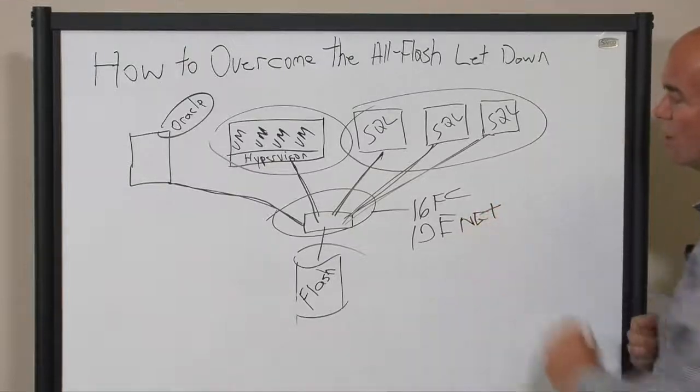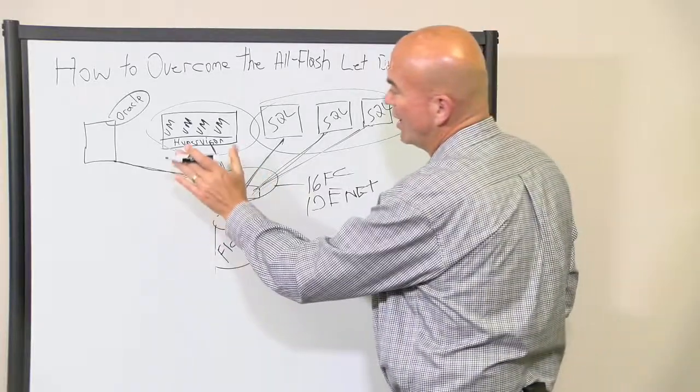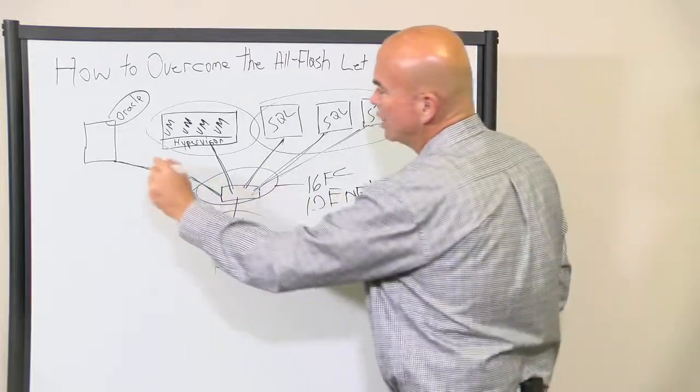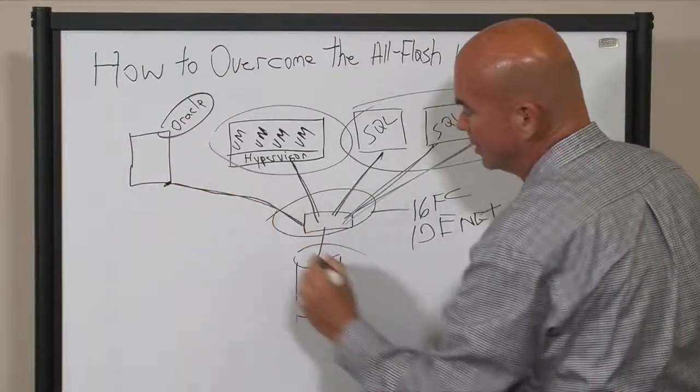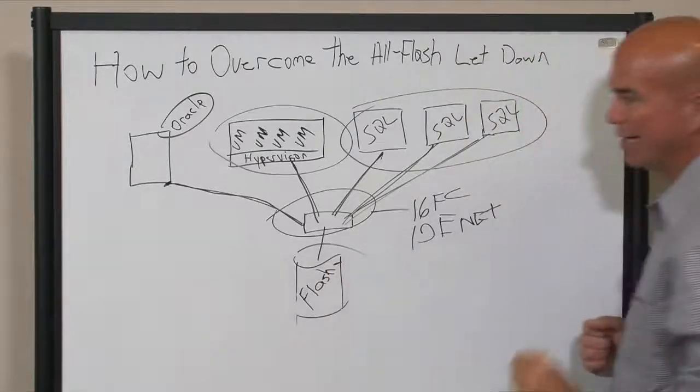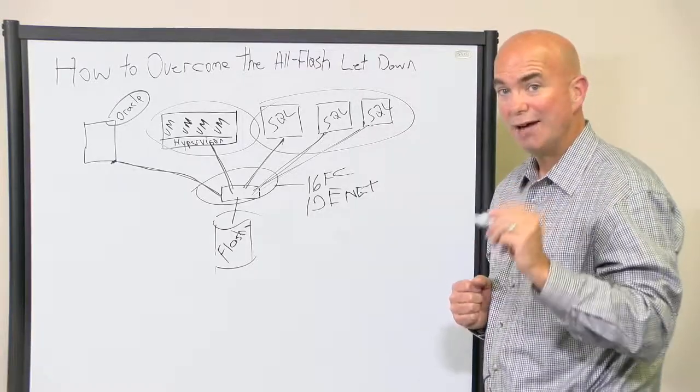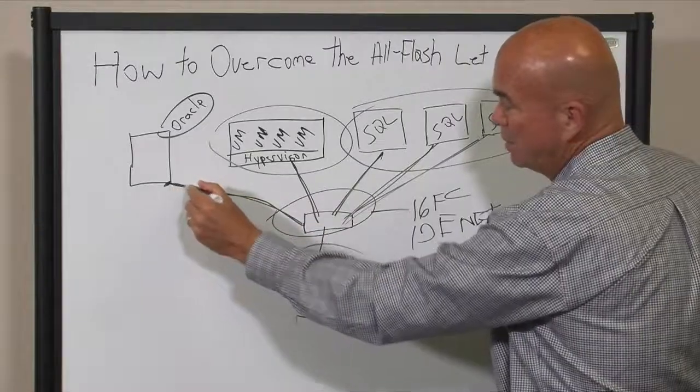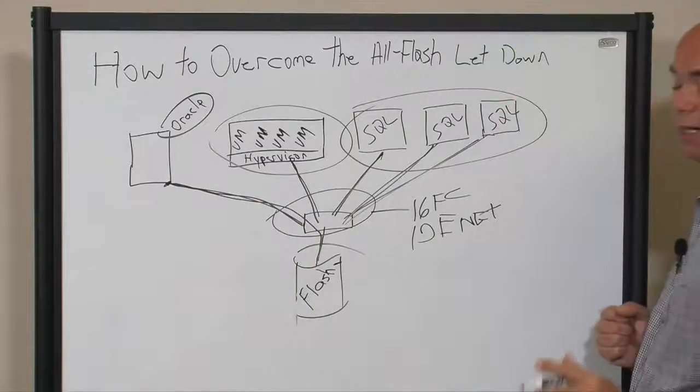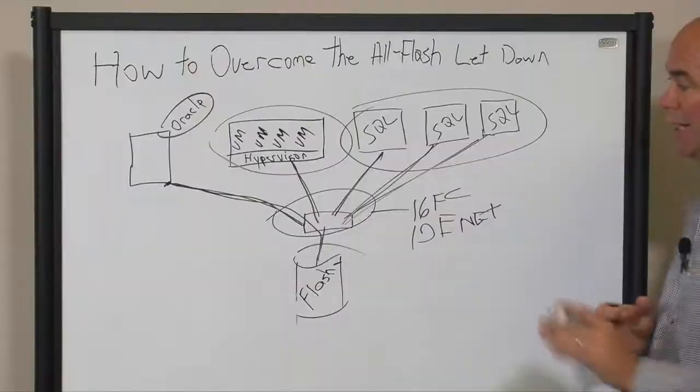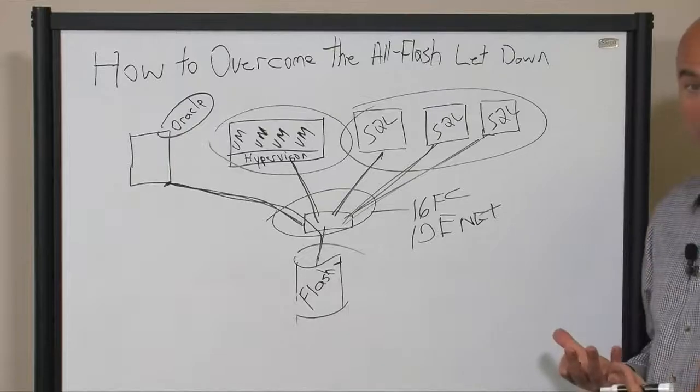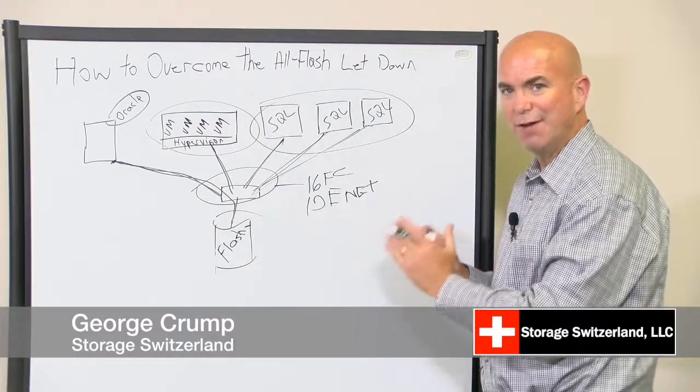The other thing you want to check on the network is make sure you have end-to-end data integrity checking. We want to make sure that data that starts here when it gets to the flash array is exactly what we sent. Having integrity checking becomes important especially as these speeds start to accelerate. So it's not just buy more bandwidth. It's also make sure that data going across that bigger bandwidth is more efficient and effective.